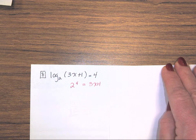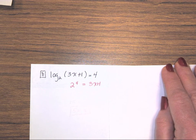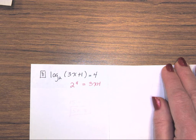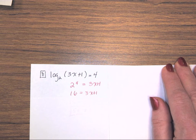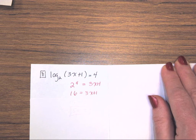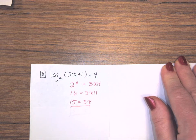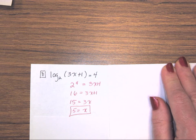2 to the 4th power. Well, if I multiply 2 four times, I get 16. Subtract 1. Divide by 3. And 5 is a good answer.